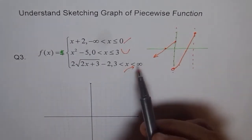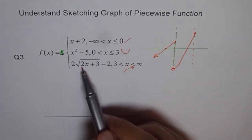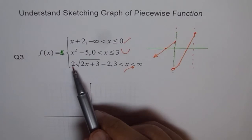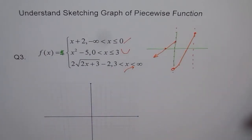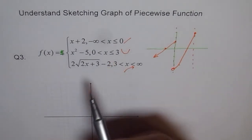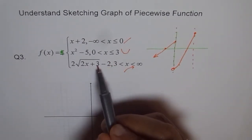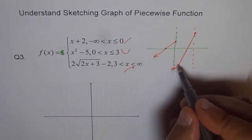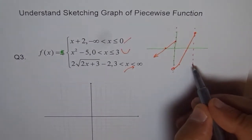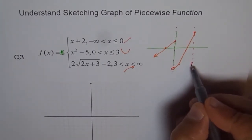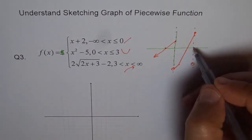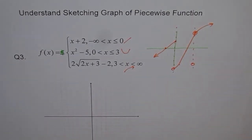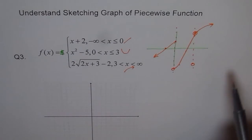Now the square root piece starts at x equals 3. Plugging in 3: 2 times 3 is 6, 6 plus 3 is 9, square root of 9 is 3, and 3 times 2 is 6, then 6 minus 2 is 4. So at x equals 3 we get the value 4, but this point is not included — it's a hole. For x equals 4: 4 times 2 is 8, 8 plus 3 is 11, square root of 11 is slightly more than 3, giving a value slightly above 4. So the square root function starts just above (3, 4) and curves upward.